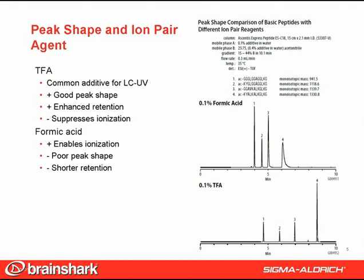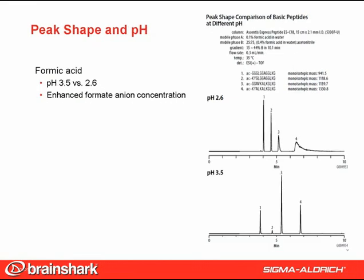Also note the enhanced retention of peptides in the presence of TFA, presumably due to the greater hydrophobicity of TFA relative to formic acid. This figure shows both peak shape and retention benefits of TFA. However, one can overcome the deficiencies of formic acid by leveraging the mobile phase pH, as this slide shows. If we adjust the pH of the mobile phase from 2.6 to 3.5, a dramatic improvement in peak shape can be seen. The improved peak shape at pH 3.5 is best explained as a result of the increase in formate ion concentration.